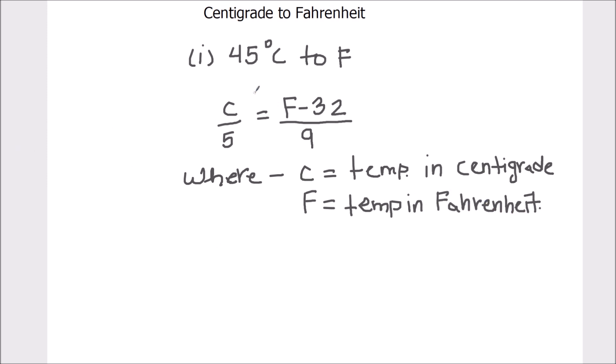So let's convert 45 degree centigrade to Fahrenheit. 45 degree centigrade is the temperature in centigrade, so instead of C we are going to write 45 divided by 5 equals F minus 32 upon 9, where F is unknown to us.